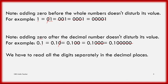While reading decimal numbers, we have to read the digits separately. For example, 2.34 — we should not say 'two hundred thirty-four,' or 'two point thirty-four,' that is also wrong. We have to read it as two point three four.